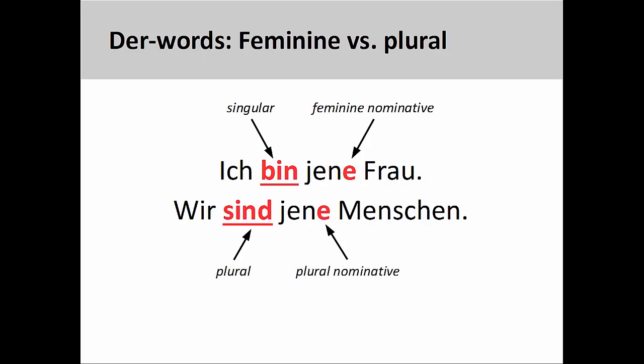It's important to pay attention to other details in the sentence to help distinguish between der-word endings. In the first sentence, the first person singular verb form bin helps me determine that the ending on the der-word must be feminine nominative. However, in the second sentence, the first person plural verb form sind tells me that the ending must be plural nominative.